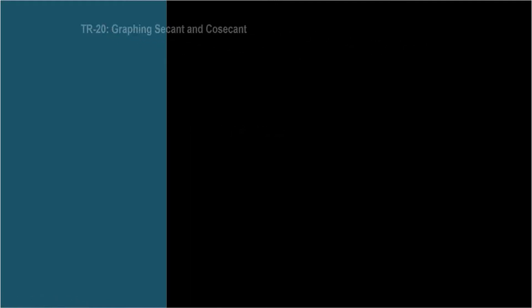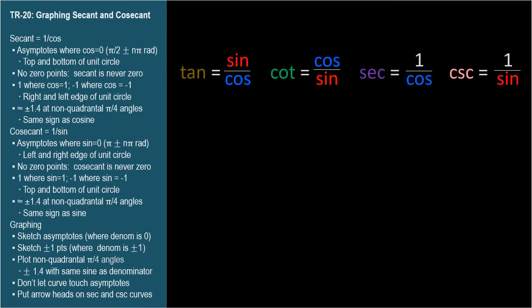In the last video, we graphed tangent and cotangent. In this video, we'll graph secant and cosecant. These ratios also have sine and cosine in their denominator, so they'll each have vertical asymptotes at angles where these values are zero. And that's where we'll start.